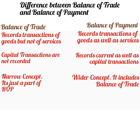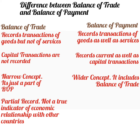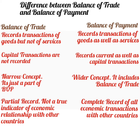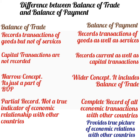Balance of trade is only a partial record and hence it is not a true indicator of economic relationship with other countries. Balance of payment is a complete record of all economic transactions with other countries and hence it provides a true picture of economic relations. In balance of payment, we also record service transactions and not only the transactions of goods.